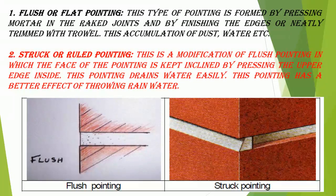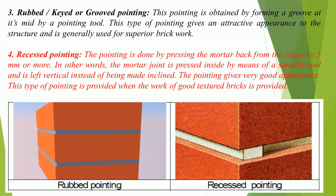2. Struck or ruled pointing: This is a modification of flush pointing in which the face of the pointing is kept inclined by pressing the upper edge inside. This pointing drains water easily and has a better effect of throwing rainwater. 3. Rubbed, struck, keyed or grooved pointing: This pointing is obtained by forming a groove at its mid by a pointing tool. This type gives an attractive appearance and is generally used for superior brick work.